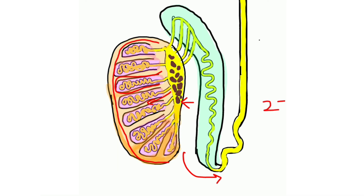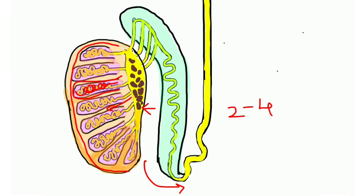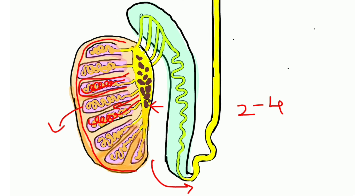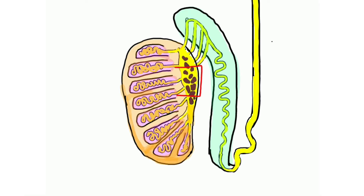In each lobule, there are coiled seminiferous tubules. The seminiferous tubules are lined by germinal epithelium, which produces spermatozoa. The thin thread-like loops of seminiferous tubules, towards the mediastinum testis, become straight. In the straight part, they do not produce spermatozoa but discharge the sperms into the network of rete testis. From the rete testis, there are small efferent ductules that connect the rete testis to the head of the epididymis.